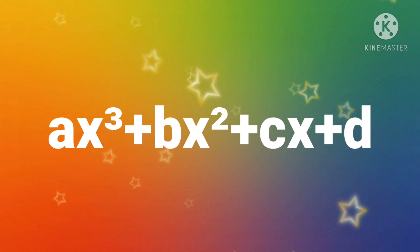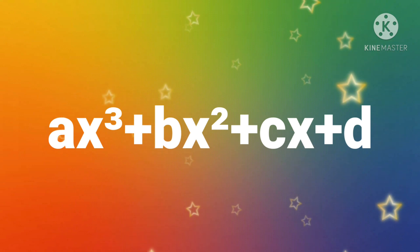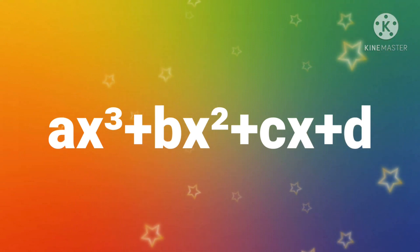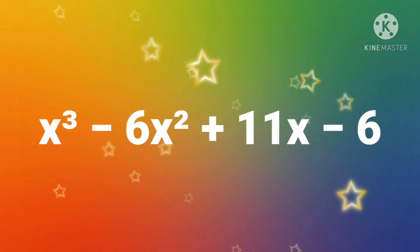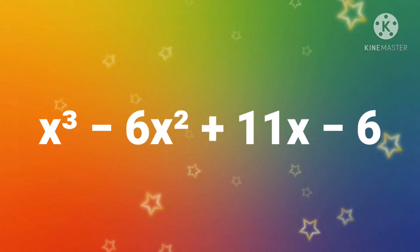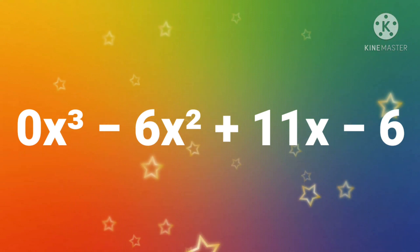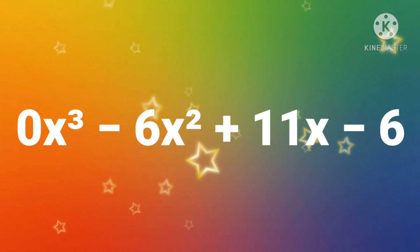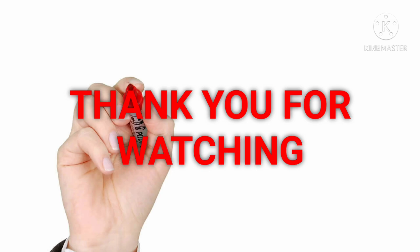The general form of a cubic polynomial is ax cubed plus bx squared plus cx plus d, where x is an unknown variable and a, b, c, d are real numbers. If a is equal to 0, then it becomes a quadratic polynomial.